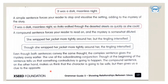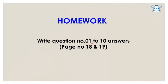We have already learned complex sentences, compound sentences, and compound-complex sentences. You need to use them properly. If you want to make your story more interesting, you need to use compound and complex types of sentences. It is going to be very interesting when you write something for your audience.